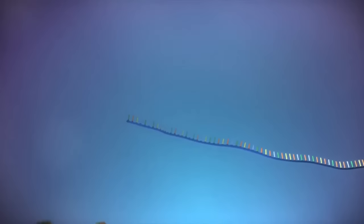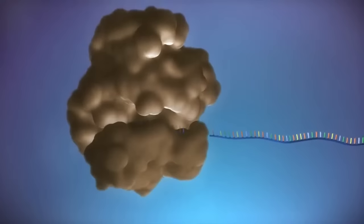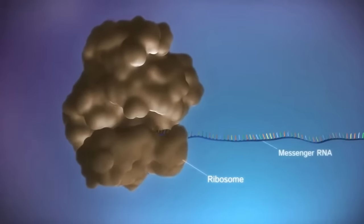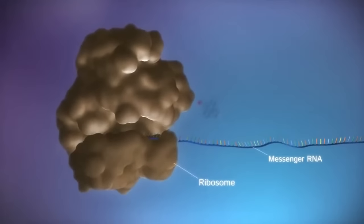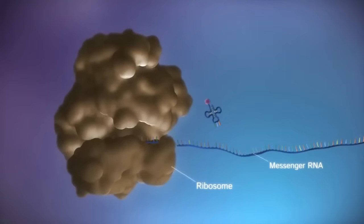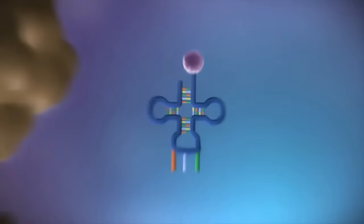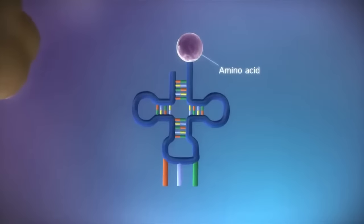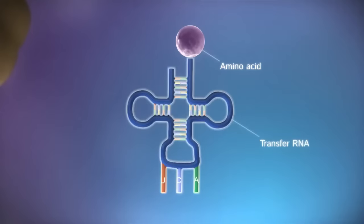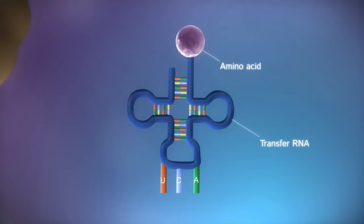Protein factories in the cytoplasm, called ribosomes, bind to the messenger RNA. The ribosome reads the code in the messenger RNA to produce a chain made up of amino acids. There are 20 different types of amino acid. Transfer RNA molecules carry the amino acids to the ribosome.